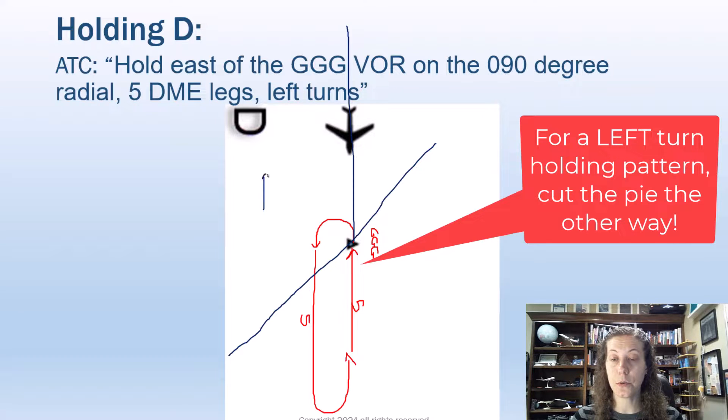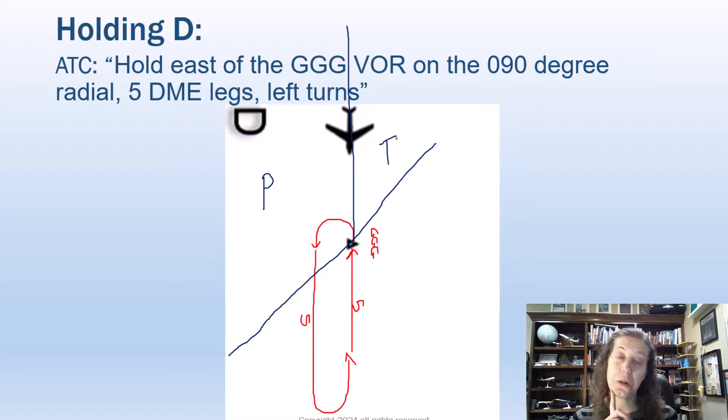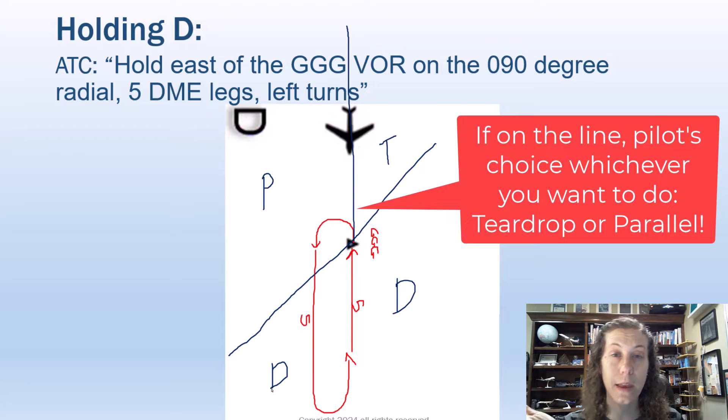We have the piece here for parallel. We have the tiny piece with no holding pattern, teardrop, no pie. And now we have direct down here. Now at this point, I noticed my airplane is on the line between teardrop and parallel. And what the AIM says is now we are allowed as pilot's discretion to choose: do I want to do teardrop? Do I want to do parallel? Entirely up to me. I can do either, and both would be perfectly fine in this example.